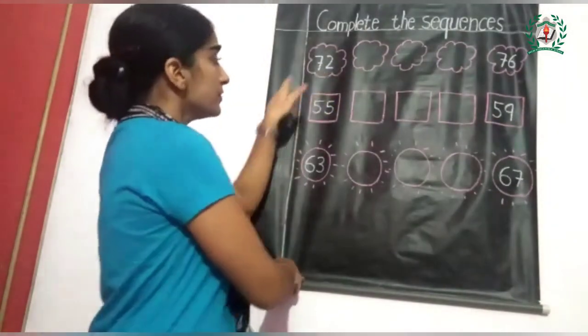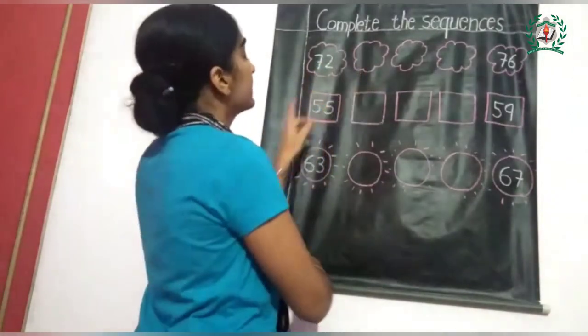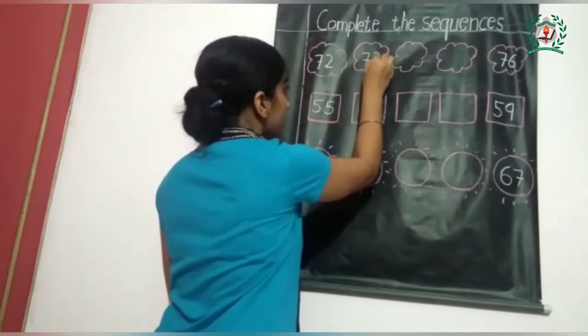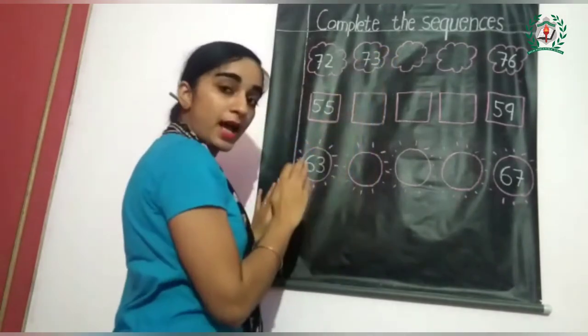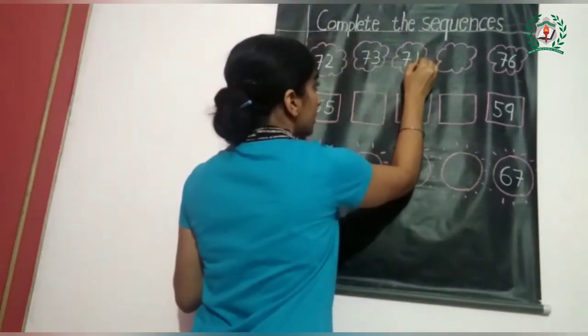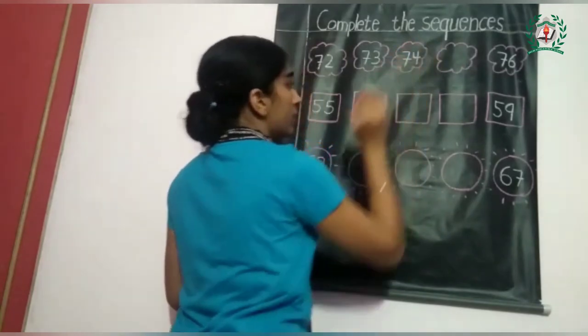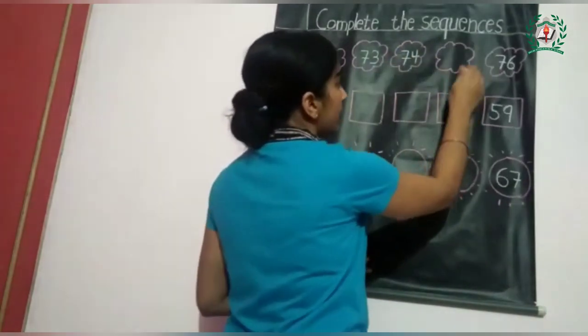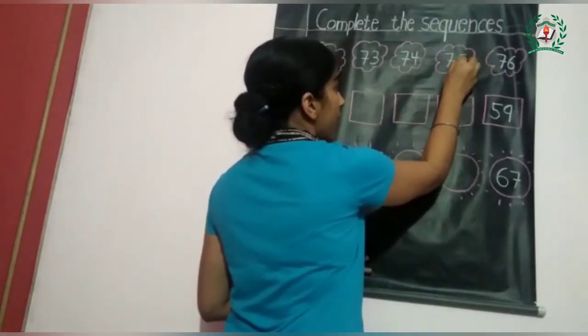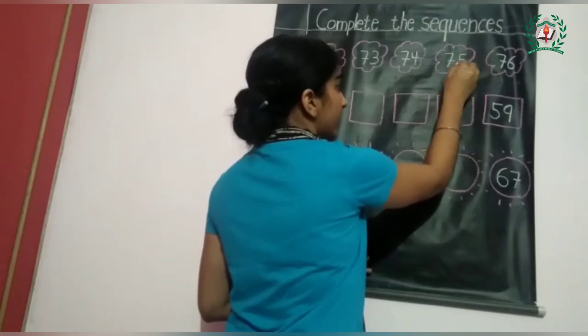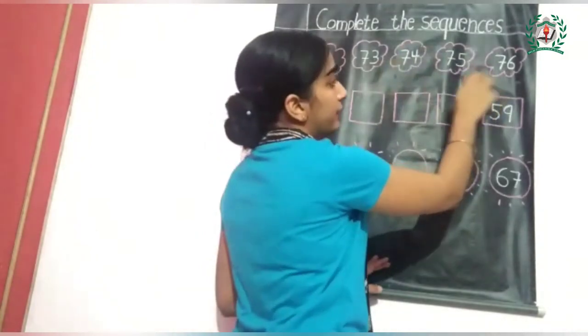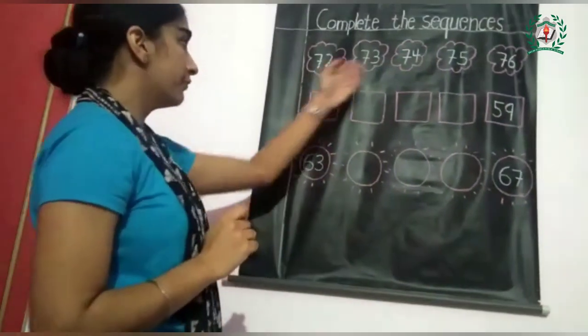What comes after 72? It's 73. What comes after 73? It's 74. What comes after 74? It's 75. What comes after 75? It's 76. See, we have completed a sequence.